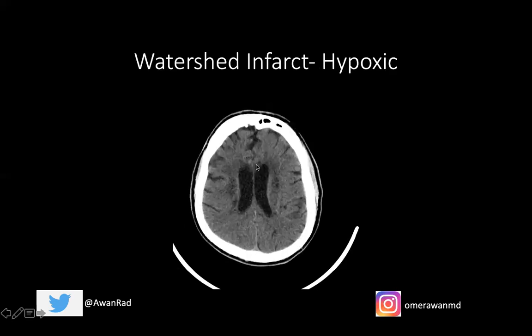A watershed infarct happens from hypoxia or hypoperfusion, commonly seen in cardiovascular surgeries, and affects the watershed areas. The hypoattenuation here is in the watershed area between the ACA and the MCA — a cortical watershed area. Further areas represent the watershed between the PCA and the MCA. The hypoattenuation and dark density in this region is the watershed area within the MCA between the superficial and deep vasculature. Cardiovascular surgery is a high risk factor for watershed infarcts.